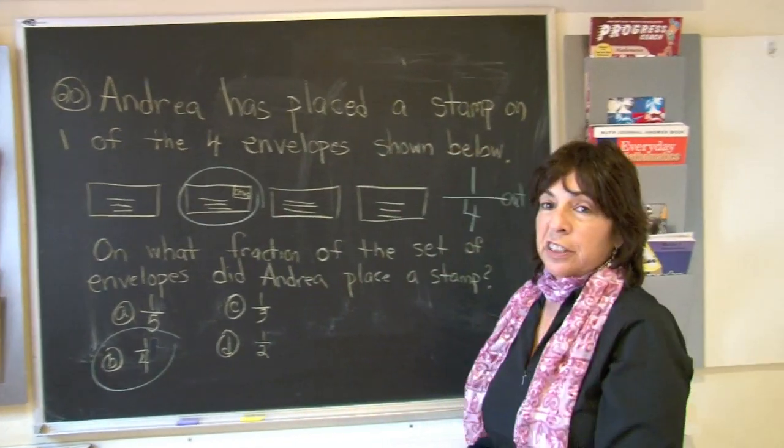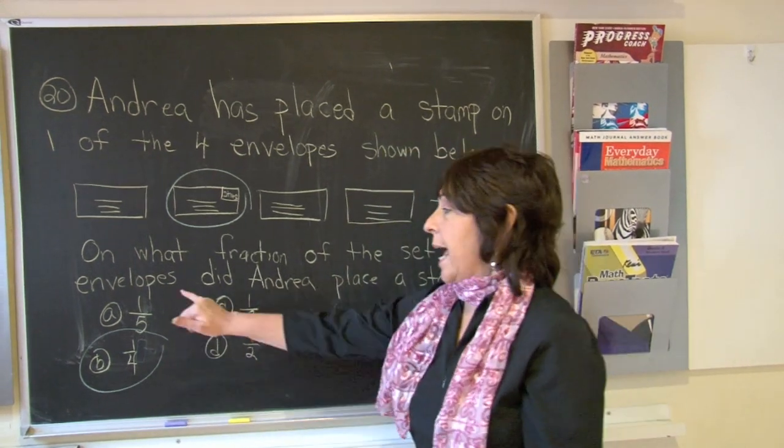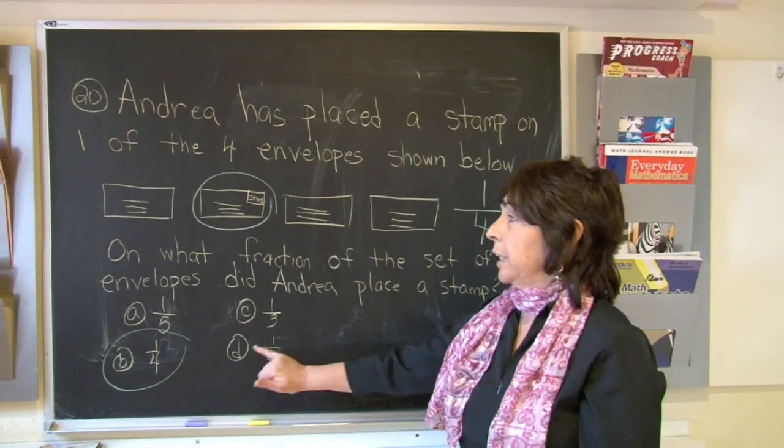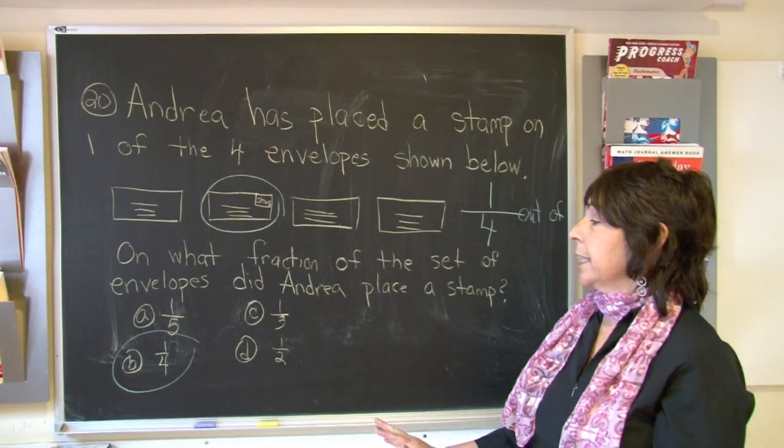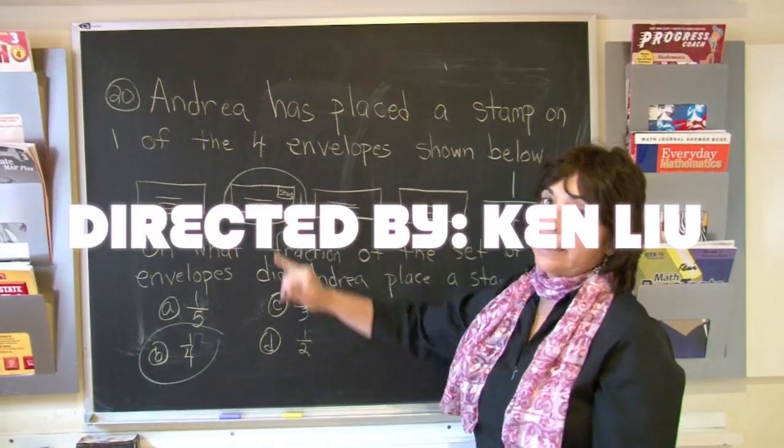In order for it to have been A, we would have needed five envelopes, one out of five. C, we would have only had three, one out of three. And D, it would have been one half or one out of two. So the correct answer is B, one out of four envelopes has a stamp on it.